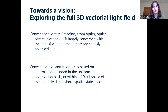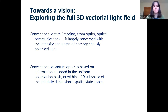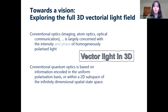My vision would be to explore the full 3D vectorial light field. Conventional optics — imaging, atom optics, communication, tweezing — is largely concerned just with intensity and, to a lesser extent, the phase of homogeneously polarized light. But if we do care about polarization, we already know we can get better focusing and additional possibilities: investigating dichroism and birefringence, polarization spectroscopy. I think what we're missing is a larger framework for all of that.